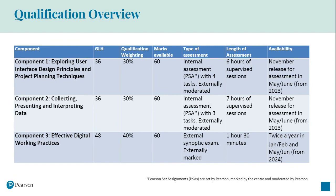The Redeveloped Tech Award in Digital Information Technology has retained the same three-component structure as the current Tech Award. Components one and two are each 36 guided learning hours and each worth 30% of the qualification grade. They are assessed using the new Pearson Set Assignments, or PSAs.